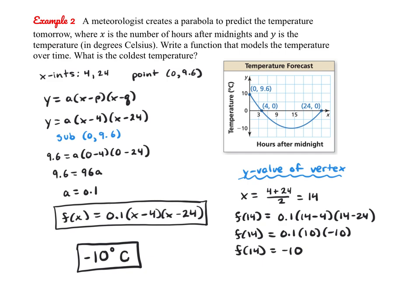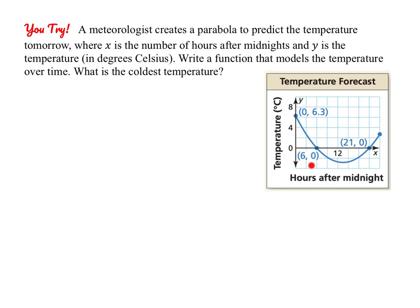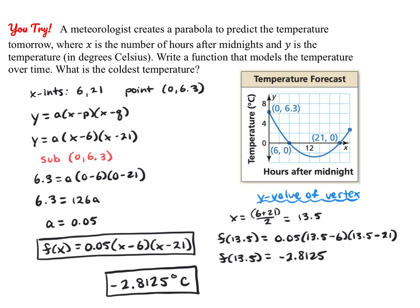And there you go. Please pause the video and give the next one a try on your own. Since we're given the x-intercepts and a point, I used intercept form to create the function: 0.05 times (x minus 6) times (x minus 21). To find the coldest temperature, they're asking for the y value of the vertex. The x value of the vertex was 13.5, and plugging that in gives a y value of negative 2.8125 degrees Celsius. Don't forget to always include units in your final answer.